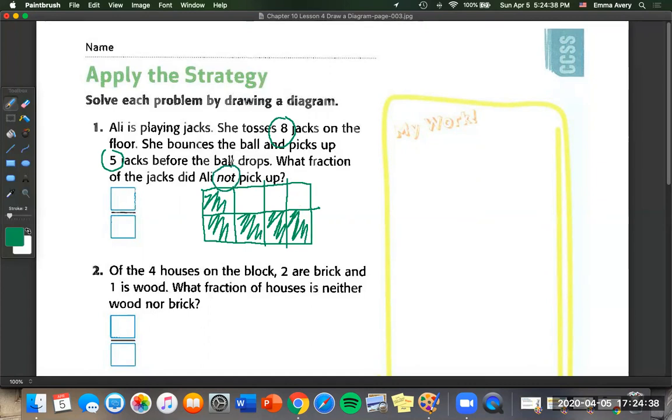And we want to know how many did she not pick up? Well, we can see that there are one, two, three empty spaces. So three in our numerator and our denominator is going to be the same as eight.